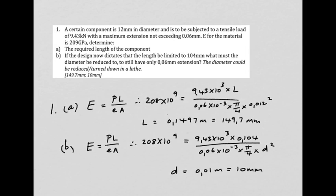This is a typical design problem where we are told that a component is 12 millimeters in diameter and is going to be subjected to a load of 9.43 kilonewtons, and the extension mustn't exceed 0.06 millimeters. They also tell you Young's modulus for the material, a typical value for steel of around 200 gigapascals. First thing we've got to find is how long the component must be. Remember, if the component were longer it would stretch more, like a piece of elastic band.